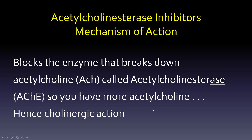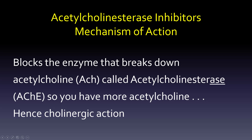How do we recognize acetylcholinesterase inhibitors? They're probably going to end with -stigmine. Some are for other conditions: physostigmine usually for toxicity and glaucoma; neostigmine for myasthenia gravis; pyridostigmine for myasthenia gravis. It doesn't mean that's the only thing they're for — neostigmine can also be used as a reversal agent for pancuronium, which is a neuromuscular blocker.